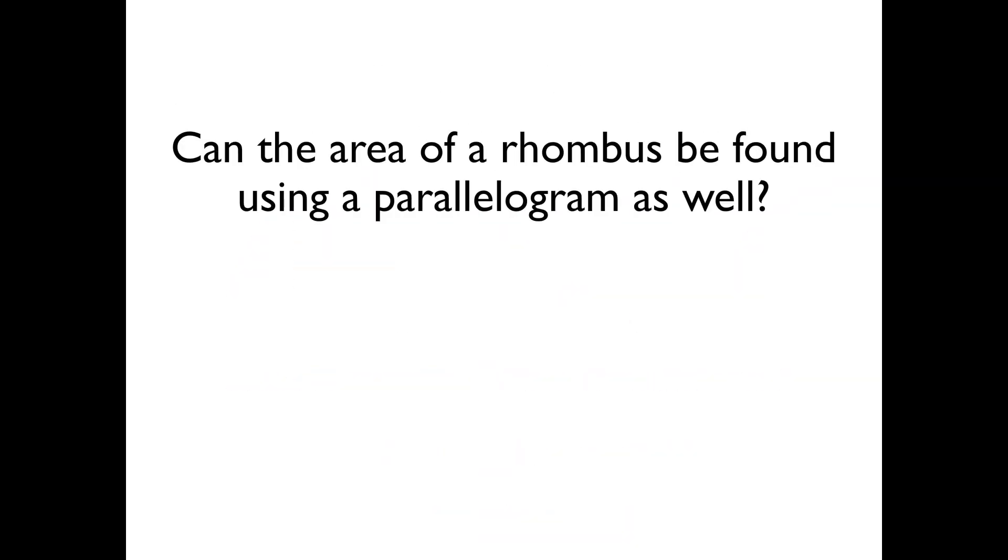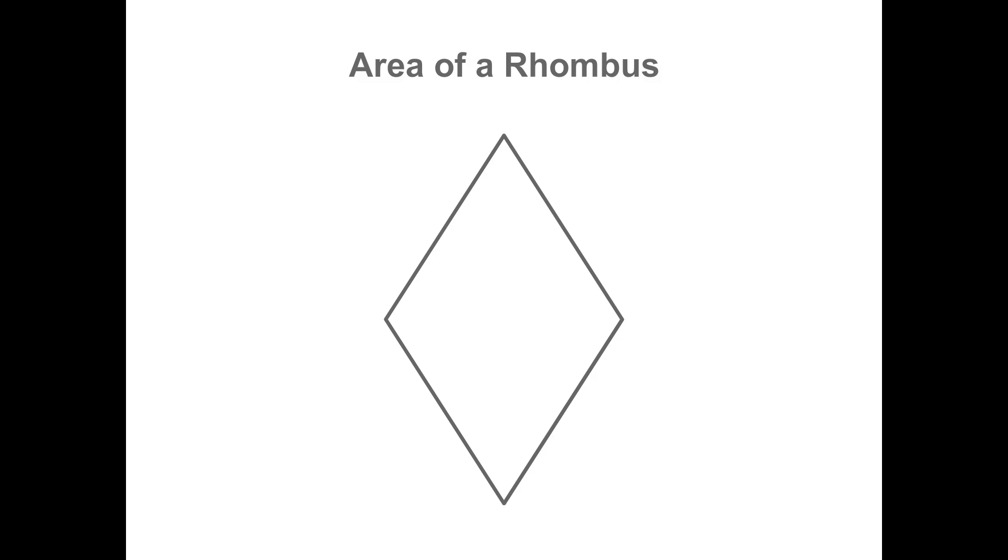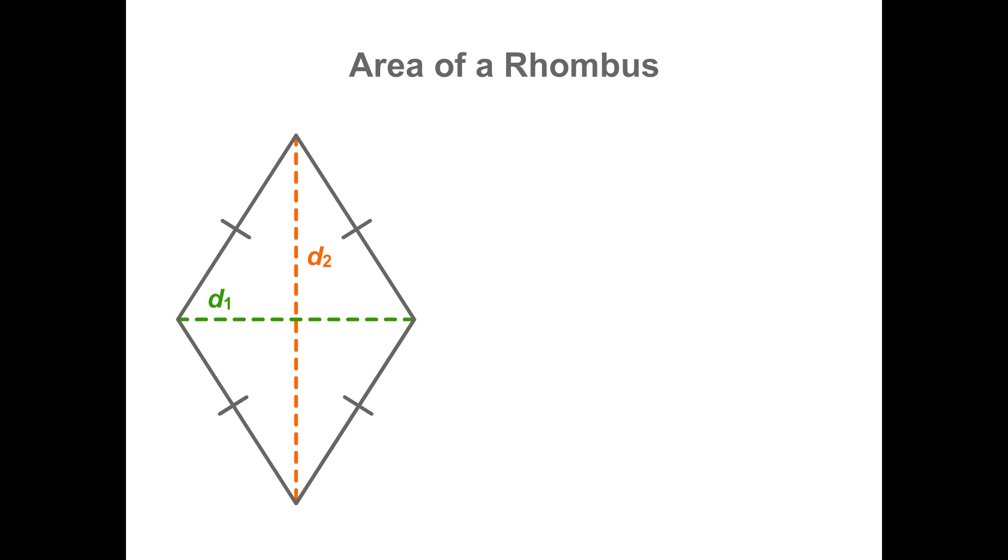Can the area of a rhombus be found using a parallelogram as well? Remember, a rhombus is a parallelogram with four congruent sides. So you can always use the formula for a parallelogram, base times height, to find the area. But the rhombus also has a unique area formula involving the diagonals. The area of a rhombus can be found by taking one half the product of the two diagonals.